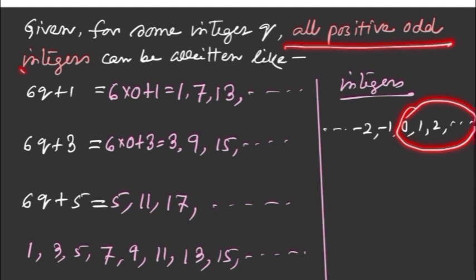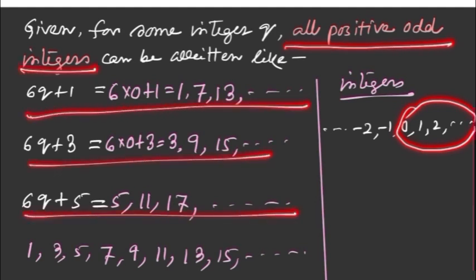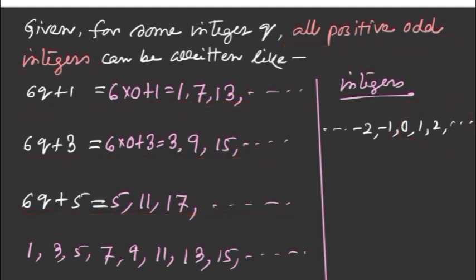That means if you have positive integer q, any positive odd integer can be written in any one of these three forms: 6q+1, 6q+3, 6q+5.